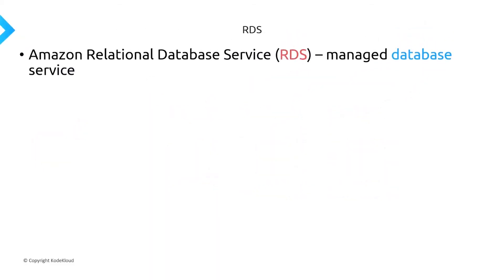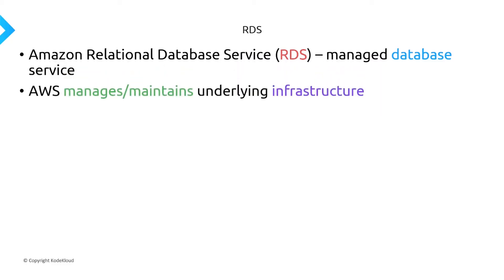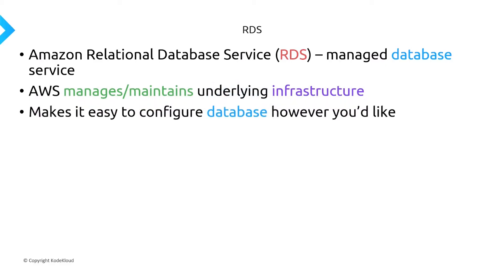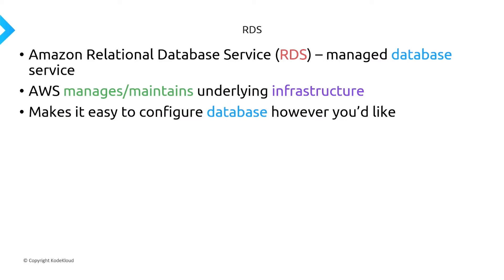RDS, which is AWS's Relational Database Service, is nothing more than a managed database service. AWS is going to handle provisioning and maintaining the underlying infrastructure — you don't have to manage the physical EC2 instances yourself. You just provide the configuration options that you want for your database, and AWS will manage that, handling all of the proper best practices. Whatever options you need — replication, backups — there's going to be a knob for all of that. All it takes is a single click or a checkbox.